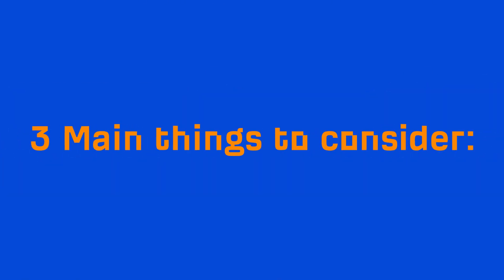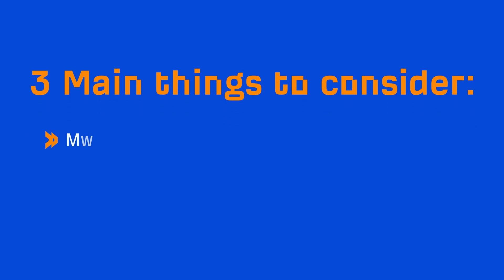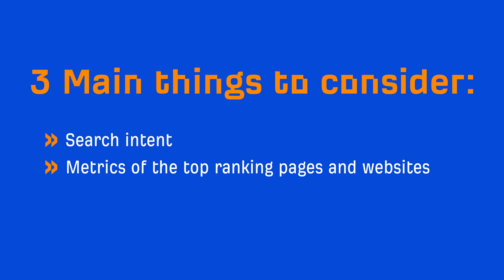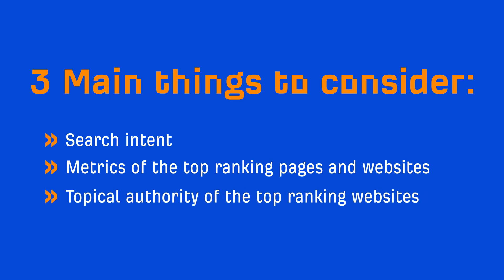There are three main things you'll want to consider before you decide to pick a fight. And those are search intent, metrics of the top ranking pages and websites, and topical authority of the top ranking websites. As we go through these points, we're going to create a list of self-check questions which should help you make informed decisions in your keyword targeting.